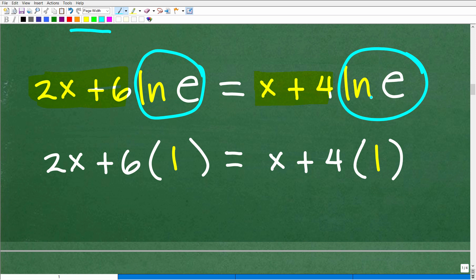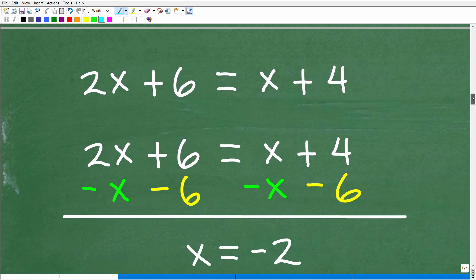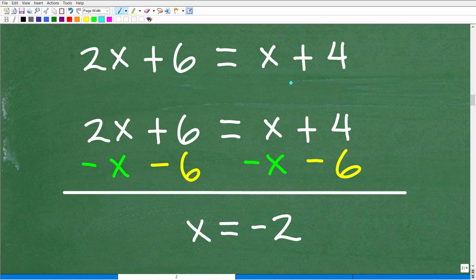So ln e is just 1. So ln e is 1 right here. So we're left really with 1 times this 2x plus 6 and 1 times this x plus 4. Really, we have a basic algebra equation right here, a basic linear equation. 2x plus 6 is equal to x plus 4. So all we need to do is solve for x, and we'll get the right answer. So here, I'll subtract 6 from both sides and subtract x from both sides of the equation. You could see the basic algebra work right there. And we get x is equal to negative 2, which, of course, is the right answer.